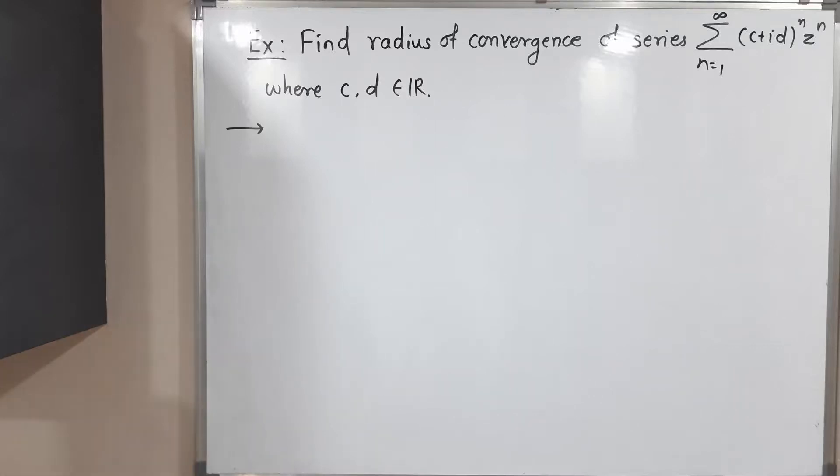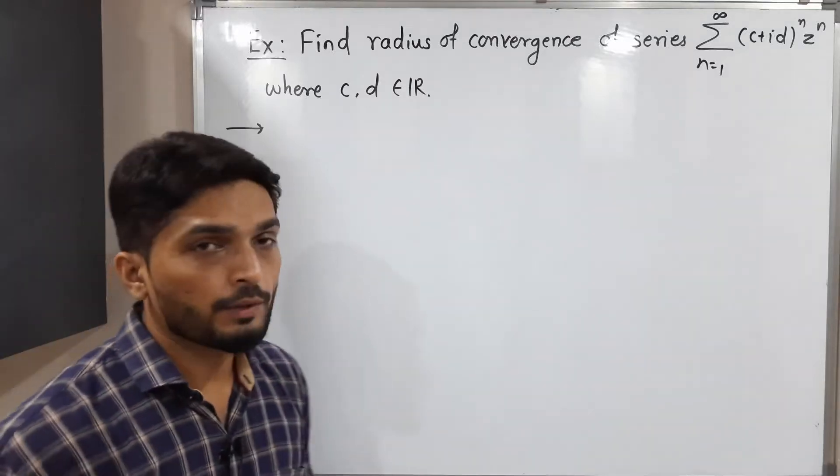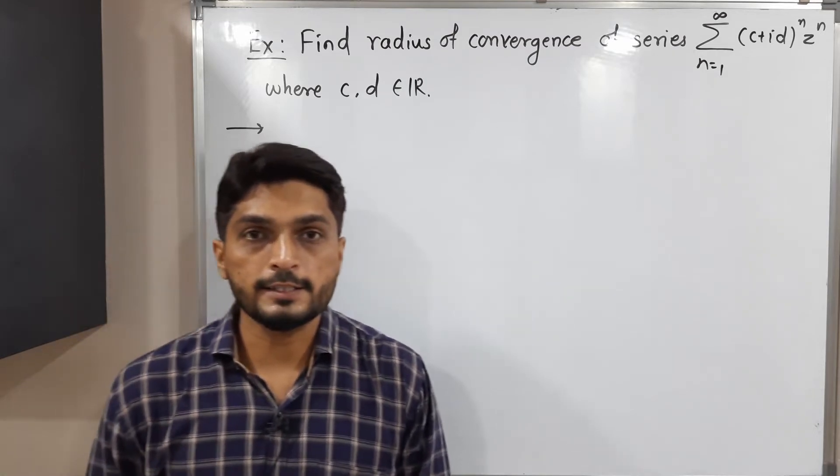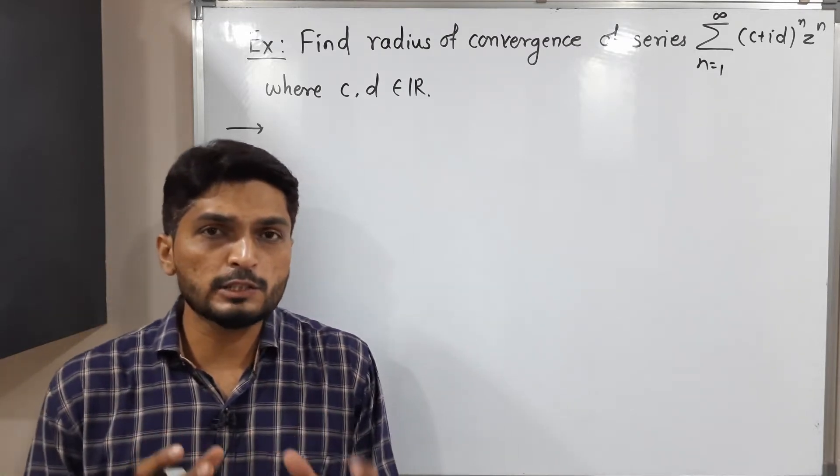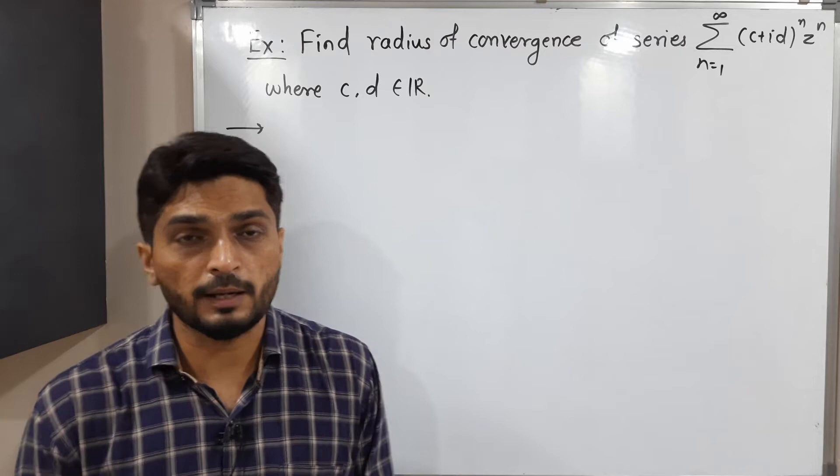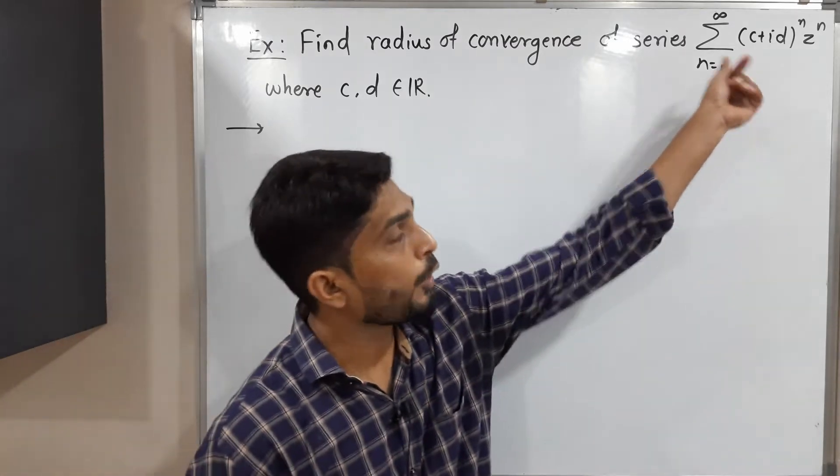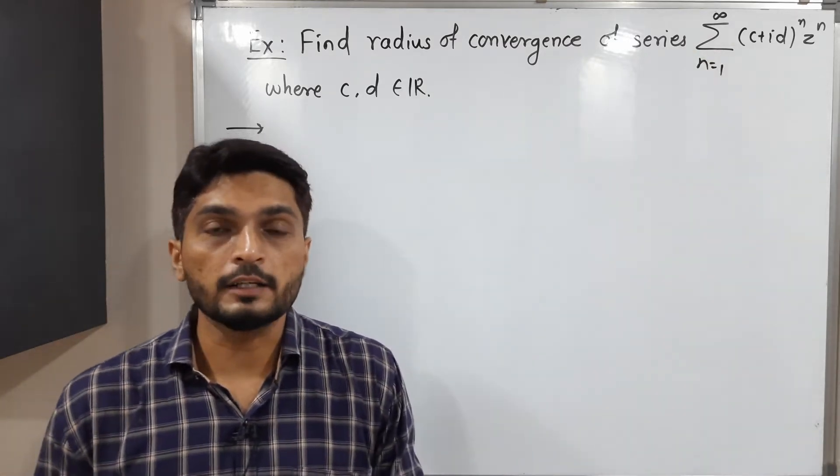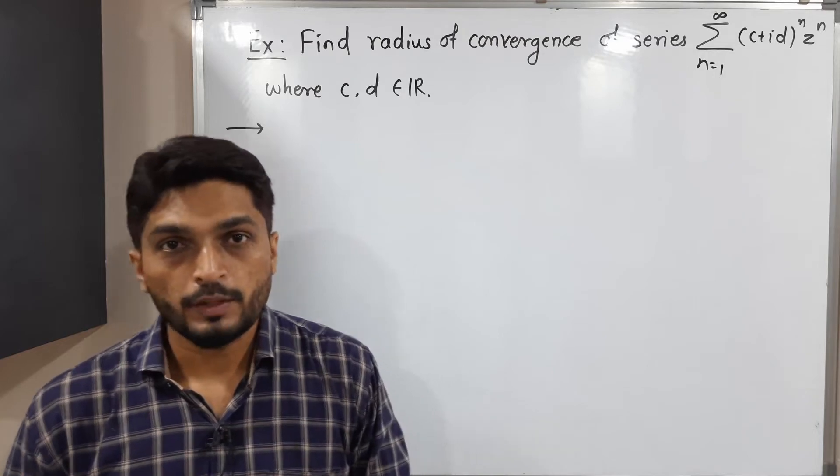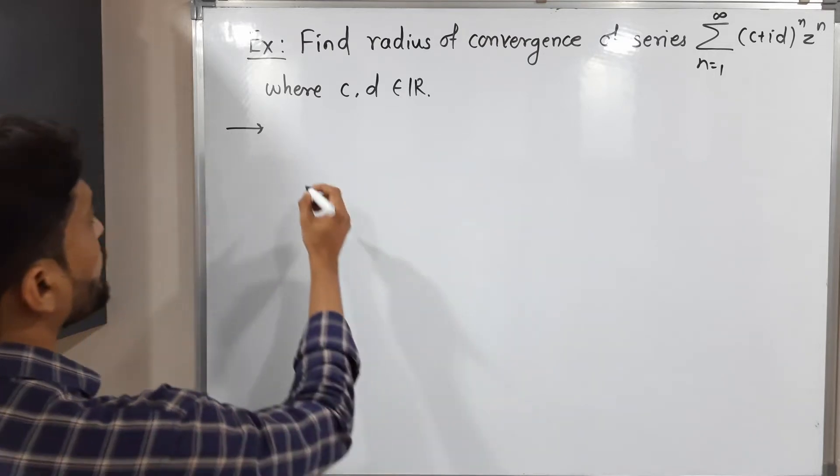Hi everyone, let us discuss this example. In this example we have this power series and we have to find its radius of convergence. This example is looking a little bit different from the previous example since we have one complex number here, c plus id raised to n.